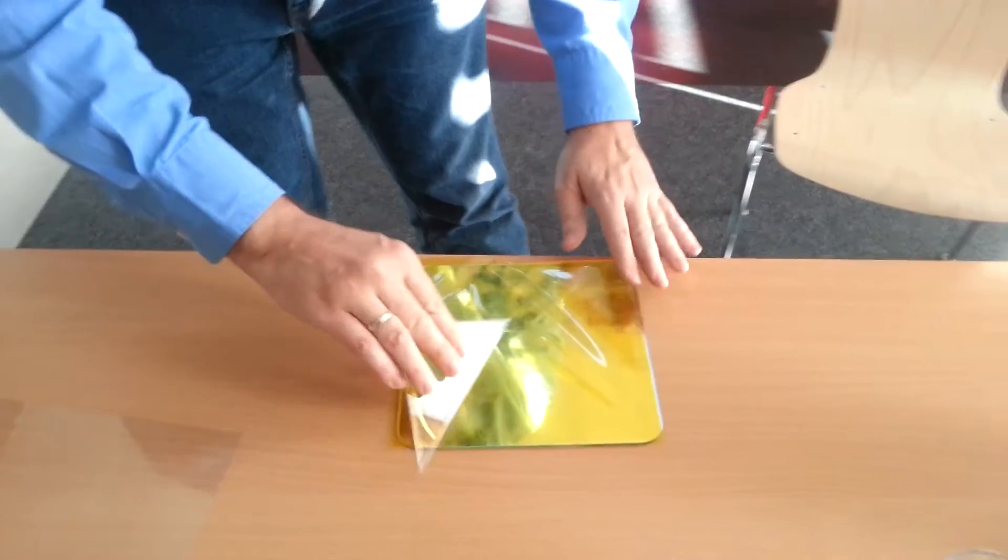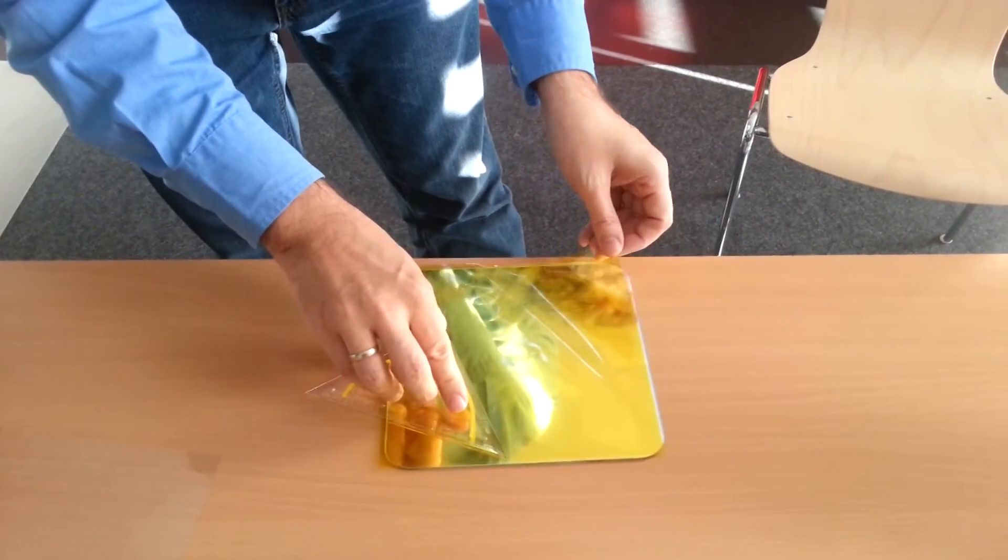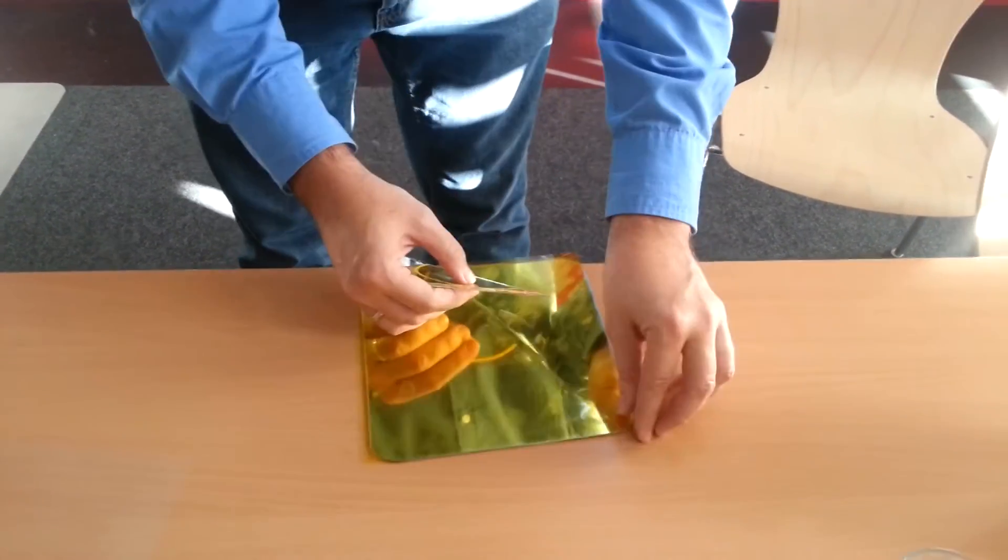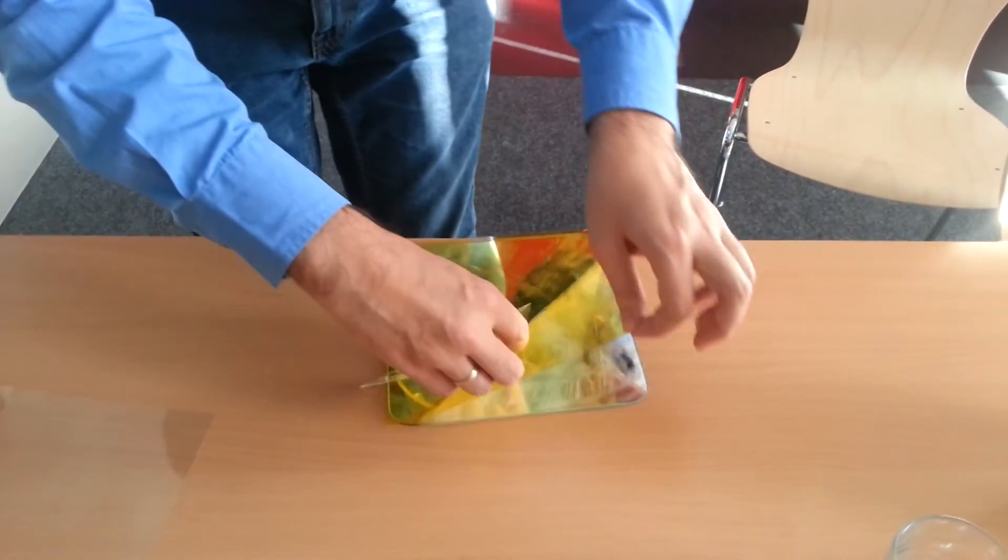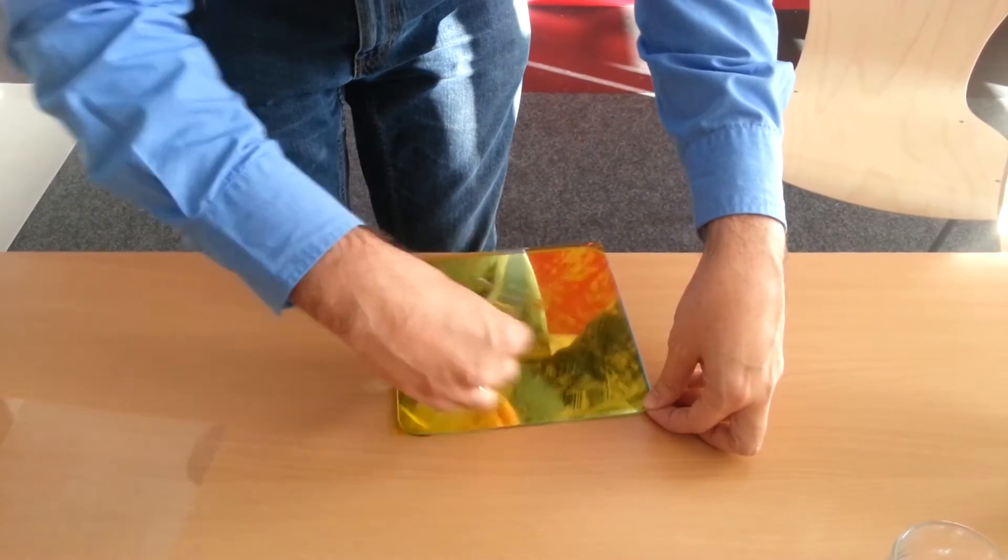Due to the dishwashing liquid, it doesn't stick immediately, so we have more possibilities to correct. It still sticks fairly enough so when you do printing it will work fine, but you're able to remove parts of it and apply it again.